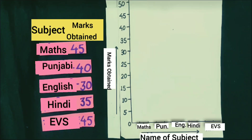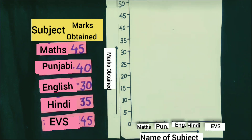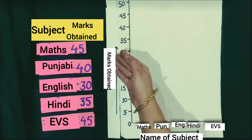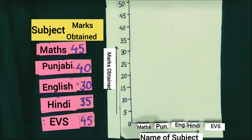To represent the marks obtained by Harman in a bar graph, I wrote subjects from left to right as Maths, Punjabi, English, Hindi, and EBS. And marks obtained by Harman are written vertically. I start from 0 and wrote the marks in a scale of 5.